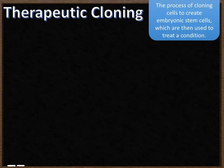Because stem cells are able to turn into any type of cell, they're very useful in treating conditions. Although to do that, you need to undergo a process called therapeutic cloning. This is the process of cloning cells to create embryonic stem cells from normal human body cells, which can then be turned into whatever cells you need to treat a condition.